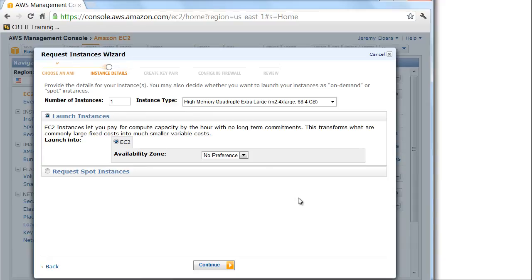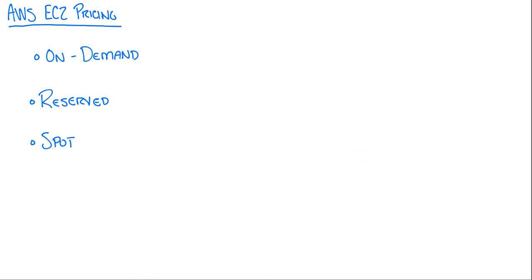And Amazon's system behind the scenes says, okay, based on the instance types, based on the software and everything else that's on that instance, here is your on-demand price per hour. So that'll be $2 an hour or $1 an hour, whatever.